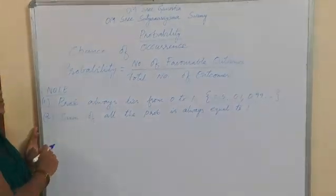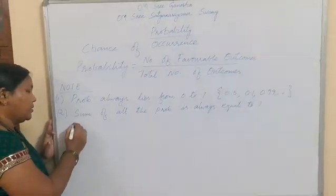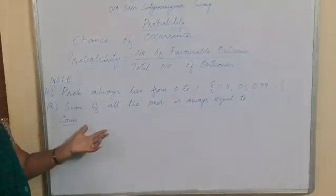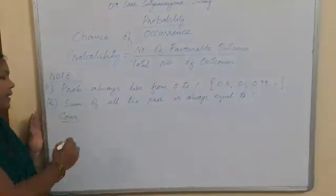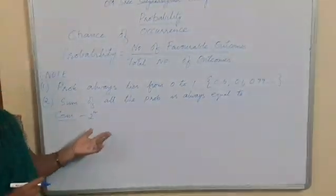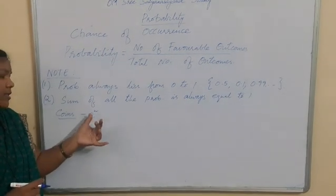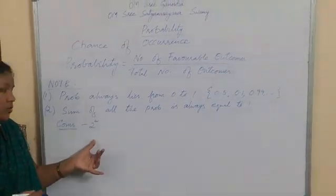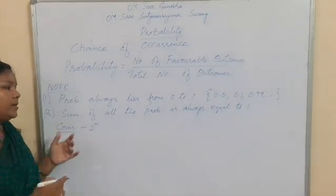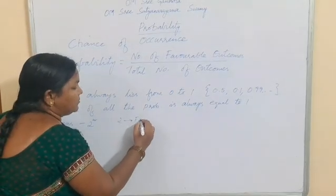Next, we shall see some examples based on coins. For coins, the total number of outcomes is in the form of 2 to the power of n. We take 2 as the base because a coin consists of 2 faces.